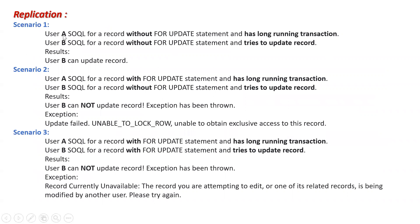Scenario one: if records are not locked — user A queries a record without FOR UPDATE and has a long running transaction, and user B queries the same record without FOR UPDATE and tries to update — user B can update because both transactions are without FOR UPDATE. Scenario two: user A performs a query with FOR UPDATE and has a long running transaction; user B queries the record without FOR UPDATE and tries to update — user B cannot update and an exception will be thrown.